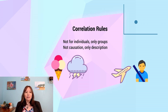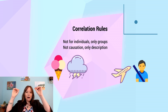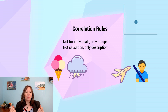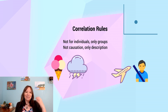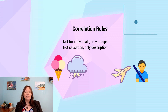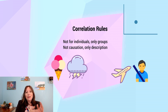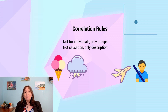Another example: someone might say the seatbelt light on an airplane causes turbulence because every time it turns on, it gets shaky. Obviously the seatbelt light is not causing turbulence — it's the turbulence causing the pilot to turn on the seatbelt light, and also causing the shaking. The causation runs in the opposite direction. Depending on how you measure variables in your study, you may not be ready to assume the direction of causation.